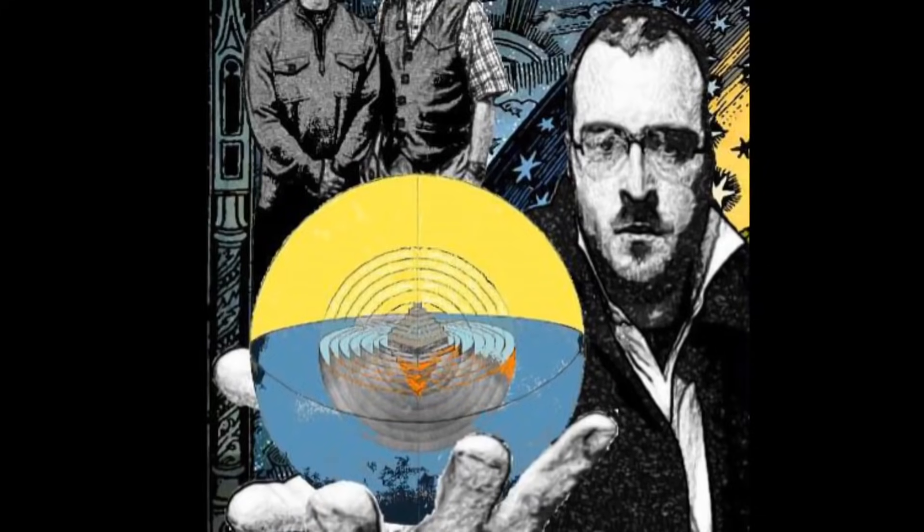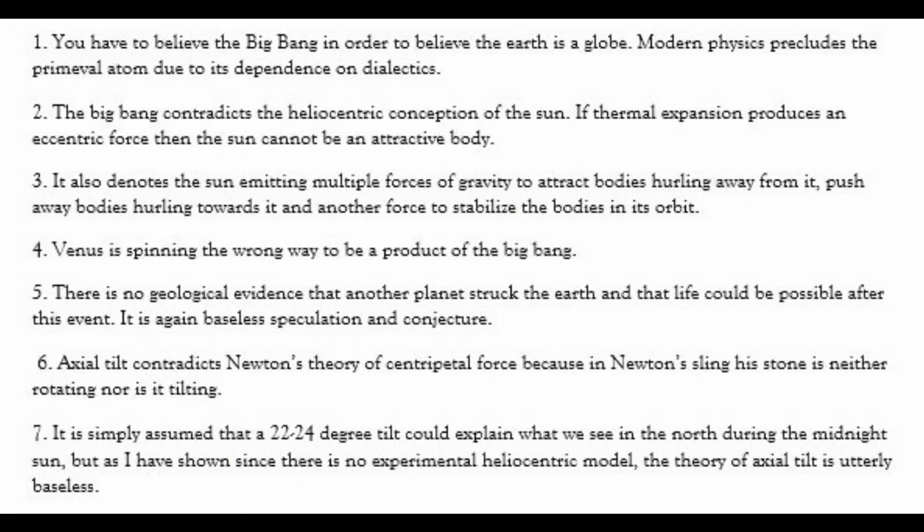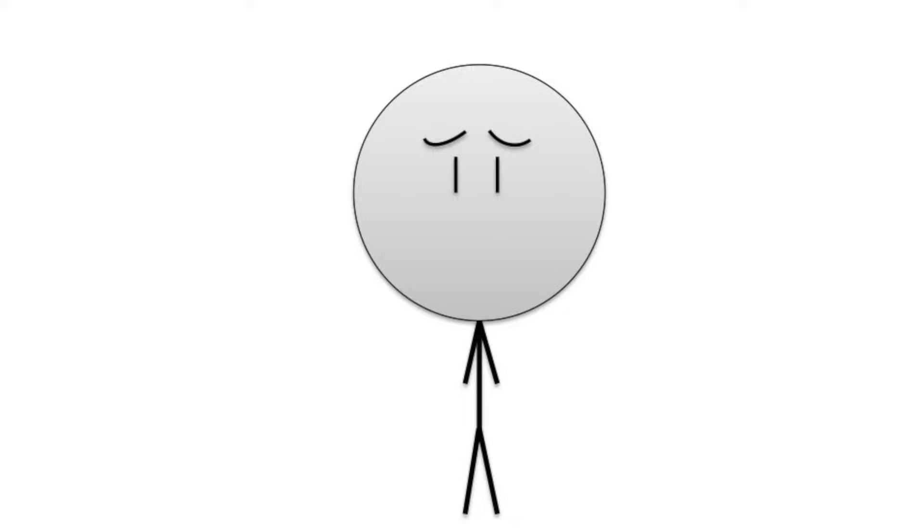The problems are exponential. You have to believe the Big Bang in order to believe the Earth is a globe. And as I've shown, modern physics contradicts the idea of a primeval atom, due to its dependence on dialectical reasoning. Aww, look at you, trying to use physics to debunk physics. Let me just set some definitions straight so you don't butcher them to death and straw man actual scientific claims. The Big Bang is simply the expansion of space. Which means, since space is expanding now, the Big Bang is still happening as we speak. It also describes the expansion of space from a supposed singularity 13.8 billion years ago. However, it doesn't say anything about how this singularity came to be, how the first atom came into existence, or how the universe popped into reality. That's just extra content you creationists are trying to loop in with the Big Bang in an attempt to discredit it.